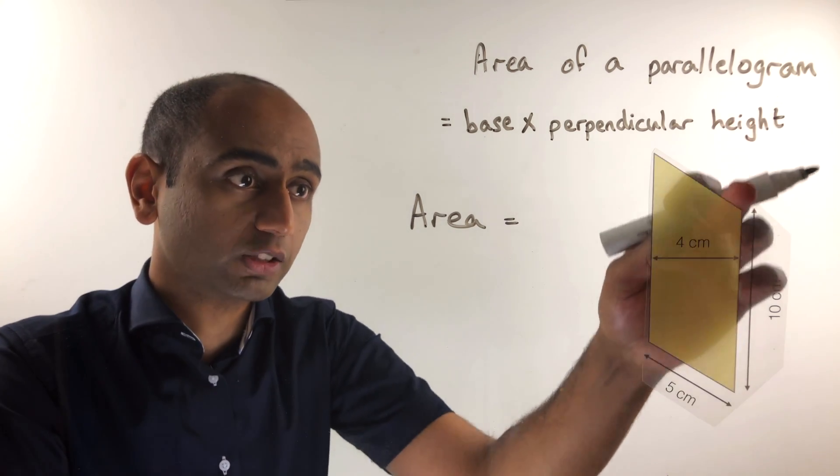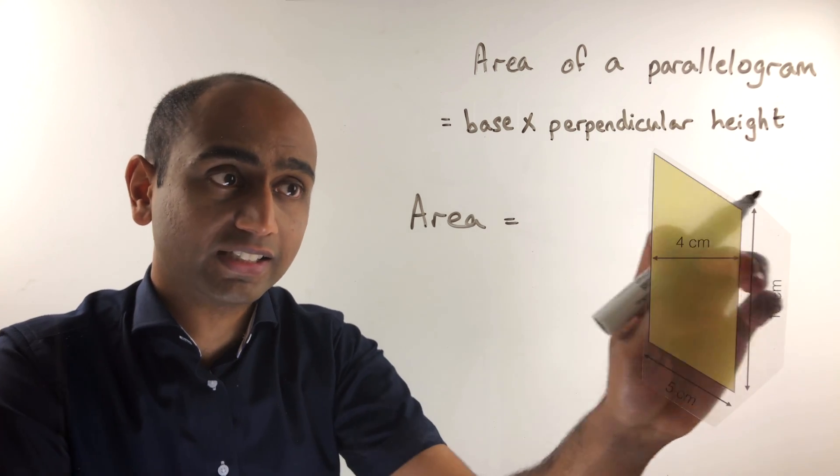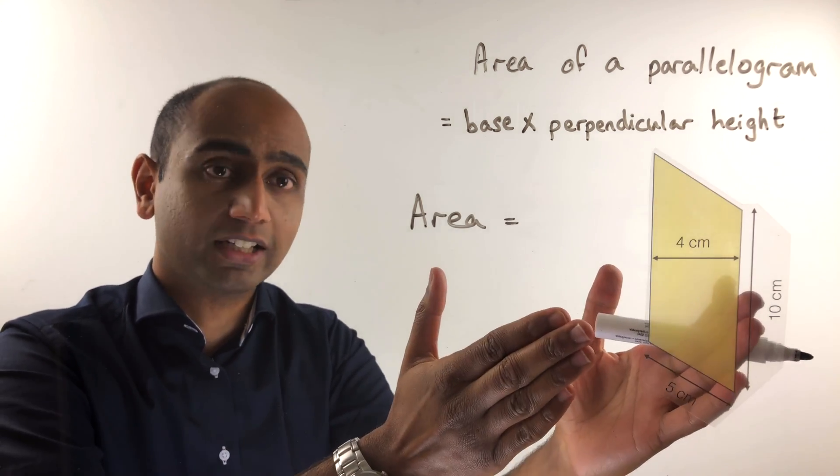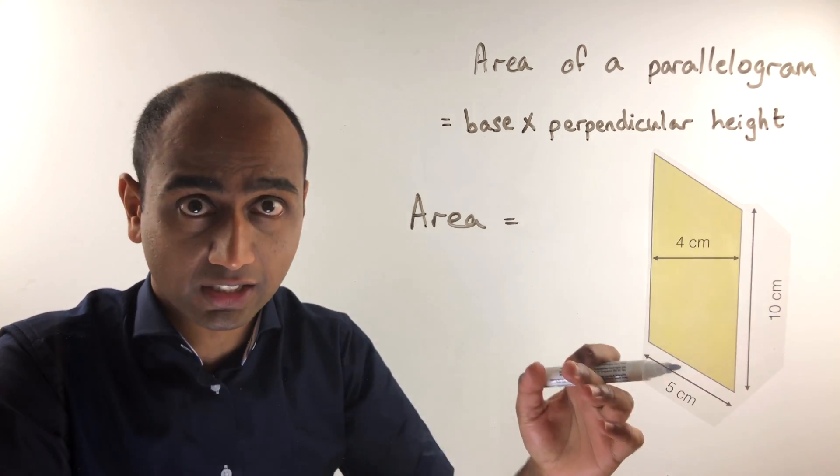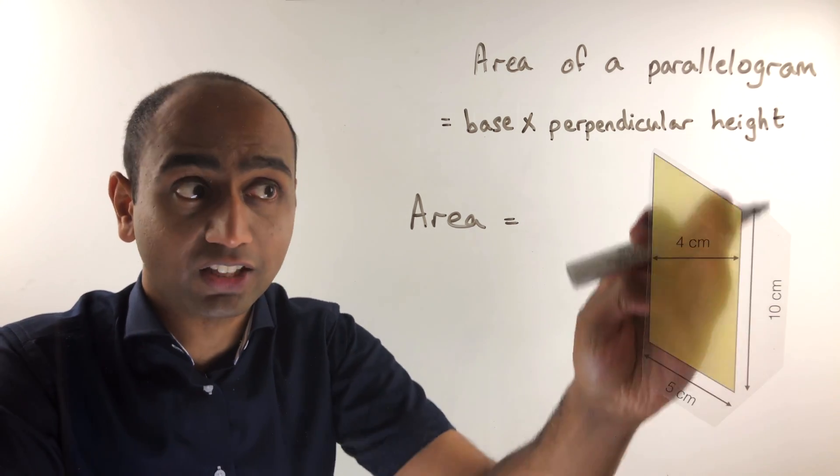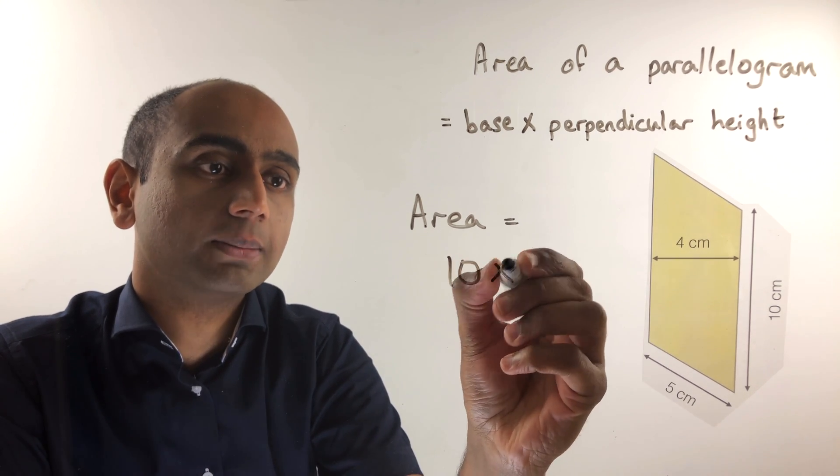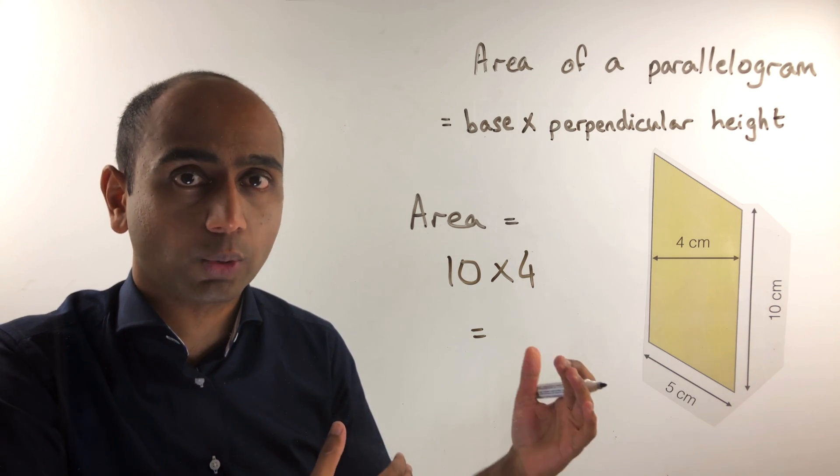What we actually need to do is multiply the 10 by the 4. This is the base and this is the perpendicular height. Don't be put off by the fact that this parallelogram has been rotated. We've got a base that is the length of one of these sides, and this is the height of the parallelogram that is perpendicular to that base. So we're just going to do 10 times 4, and that gives us an answer of 40 centimetres squared.